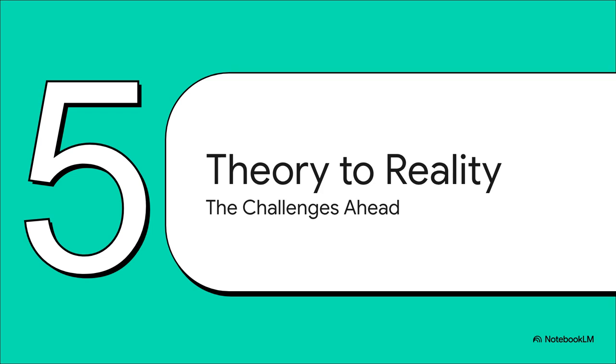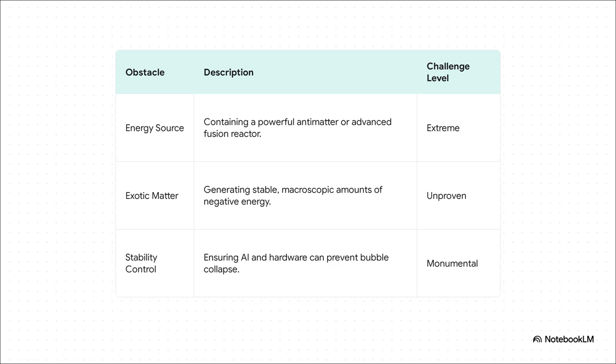We've just taken this incredible journey through some really wild physics and engineering. So now we've got to bring ourselves back down to Earth. We have to ask, what's really standing between this amazing blueprint and an actual working starship? And to its credit, the blueprint is brutally honest about the massive challenges. There are three big ones. First, the energy source. You'd need something insane, like an antimatter reactor, just to power this thing. The challenge level on that, extreme. Then, the exotic matter. Actually making enough of the stable negative energy on demand? Well, that's currently rated unproven. We literally don't even know if it's possible at this scale. And finally, stability control. Making sure the AI and the hardware are fast enough to stop a catastrophic collapse? That's described as monumental. So yeah, some pretty big hurdles.